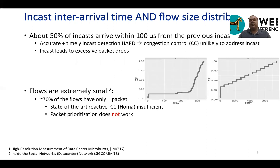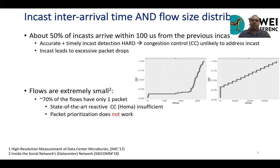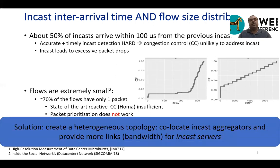This means state-of-the-art reactive congestion controls like HOMA are insufficient to solve in-cast. The figure on the right shows HOMA's performance in the presence of in-cast with flows larger than 10 kilobytes, and the right-hand side shows performance when flows have only one packet. You can see how dramatically HOMA's performance drops with extremely small flows in the presence of in-cast. Also, packet prioritization does not work because prioritization is usually based on flow size, and when all flows have the same size there is no way to prioritize some flows over others. Thus, the solution is creating a heterogeneous topology — solving the problem at the underlying topology by co-locating in-cast aggregators and providing more bandwidth for those servers.